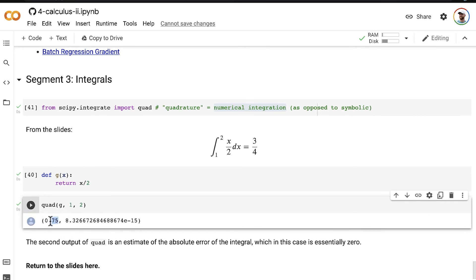So the first item in this tuple is the result, 0.75,